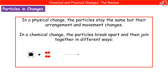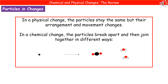If we now consider the chemical change, this is a very different situation. In a chemical change the particles are going to break apart from each other and then join together in different ways — which is what we can see in the animation at the bottom there. We're starting off with methane and oxygen on the left hand side, and then they break apart and reform as carbon dioxide and water on the right.